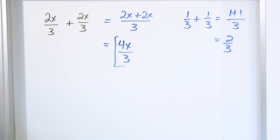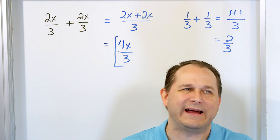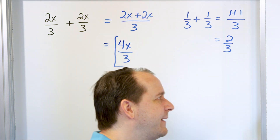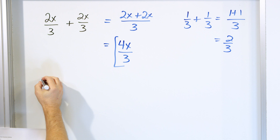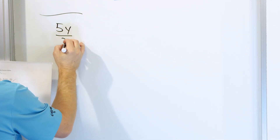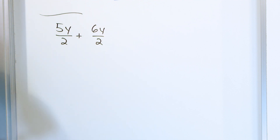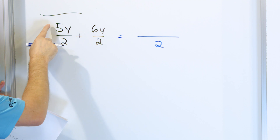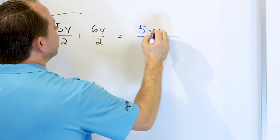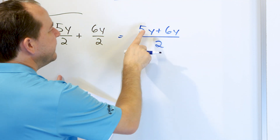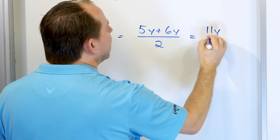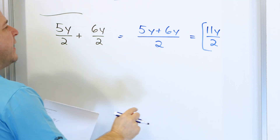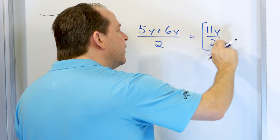Adding fractions with variables is crucial. I cannot tell you how many times in advanced engineering classes and big expressions you have to add fractions that have variables. Let's take a look at the next problem: five y over two added to six y over two. We see right away we have a common denominator, so the answer is going to be over two. We keep the common denominator and add the numerators: five y plus six y. These are like terms — both y terms — so five plus six is eleven y over two. That is the final answer.